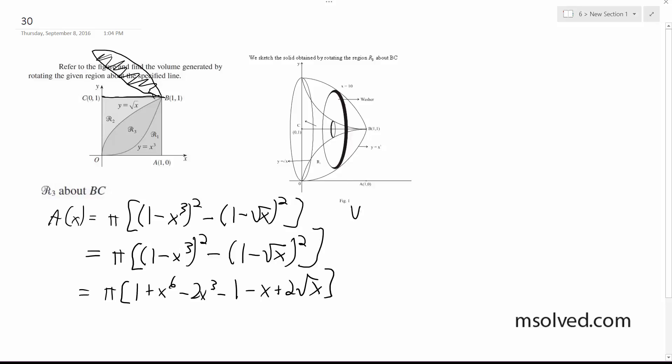Alright, so the volume is going to be equal to pi times the integral from 0 to 1 of x to the sixth minus 2x to the third minus x plus 2x to the half dx.